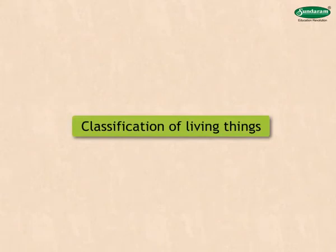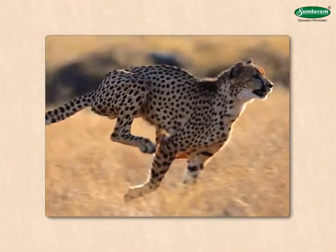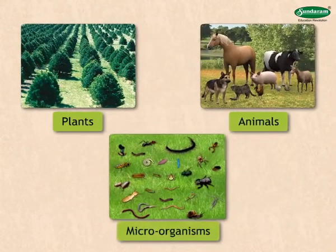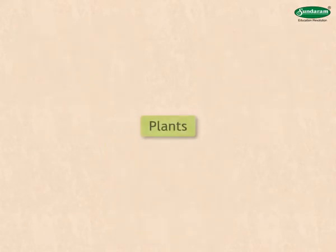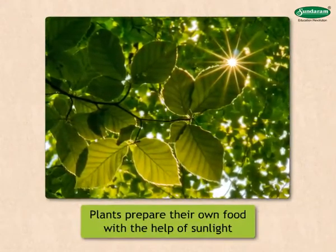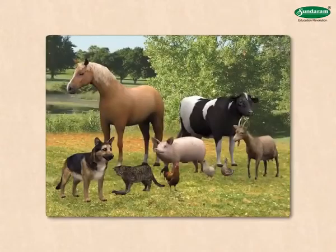Classification of living things: Living things need energy for different activities, which they obtain from food. Living things are classified into plants, animals and microorganisms according to the way they obtain their food. Plants prepare their own food with the help of sunlight. Hence, they are known as autotrophs. Besides plants, no other living things can prepare their own food.